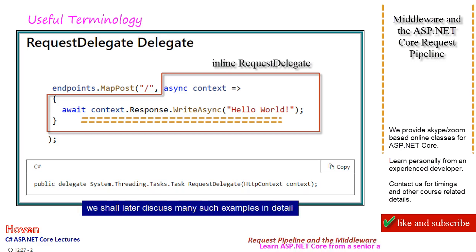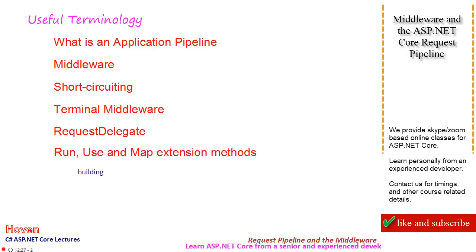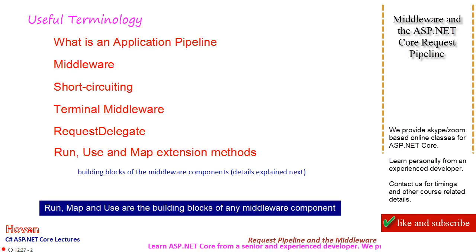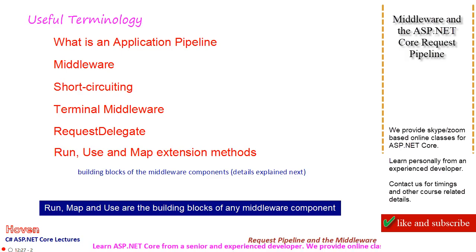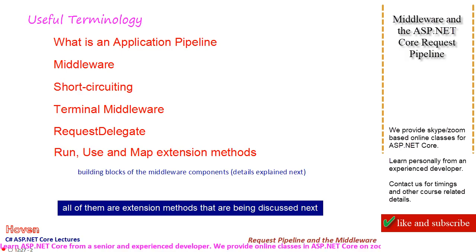We shall later discuss many such examples in detail. Run, map, and use are the building blocks of any middleware component. All of them are extension methods that are being discussed next.